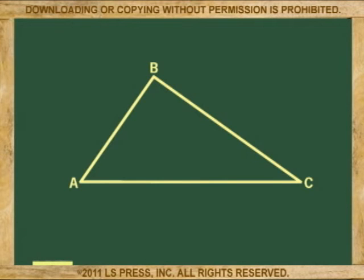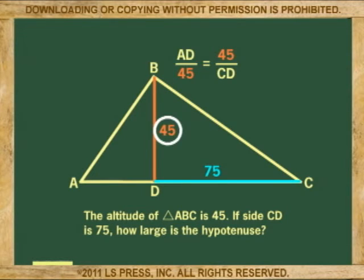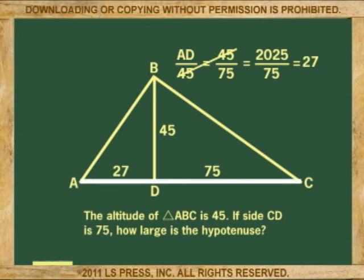One last example: the altitude of triangle ABC is 45. If side CD is 75, how large is the hypotenuse? If the altitude is 45, we multiply the geometric mean — 45 times 45 — which is 2025. 2025 divided by the known side 75 is 27. AD is 27. So AC, the hypotenuse, is 75 plus 27, or 102.